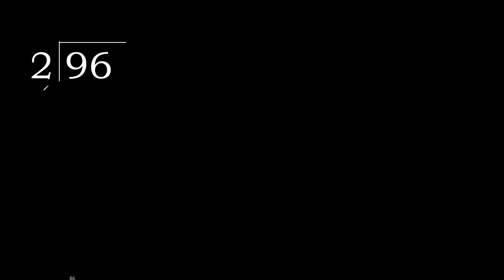96 divided by 2. 9 — is not less, therefore with 9: 2 multiplied by which number is nearest to 9 but not greater? 2 multiplied by 5 is 10, which is greater. 2 multiplied by 4 is 8, which is not greater. 9 minus 8 is 1.